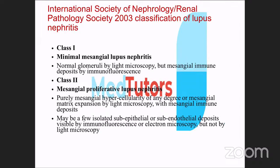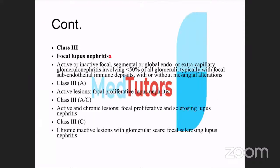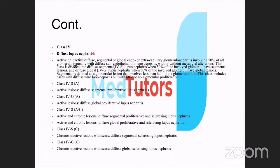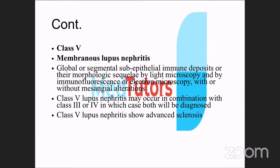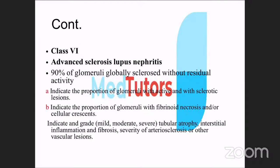The ISN/RPS classification of lupus nephritis includes: Class I — minimal mesangial lupus nephritis; Class II — mesangial proliferative lupus nephritis; Class III — focal lupus nephritis; Class IV — diffuse lupus nephritis; Class V — membranous lupus nephritis; Class VI — advanced sclerosing lupus nephritis.